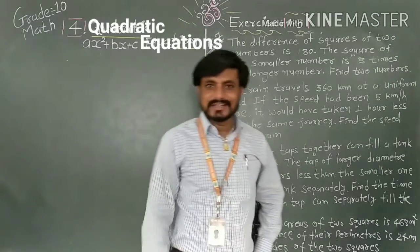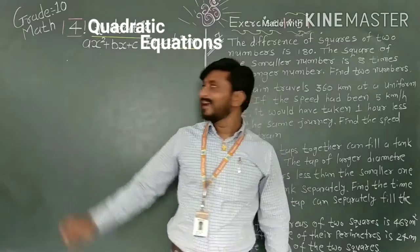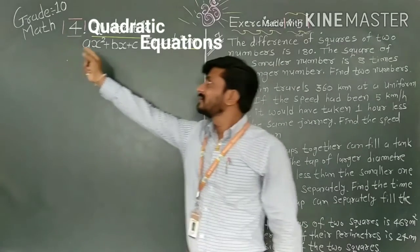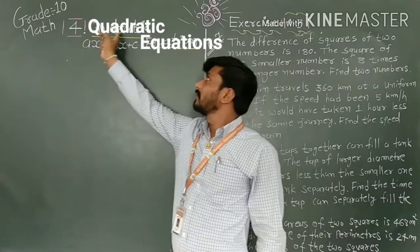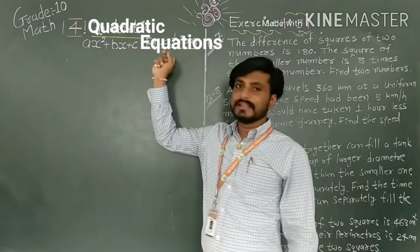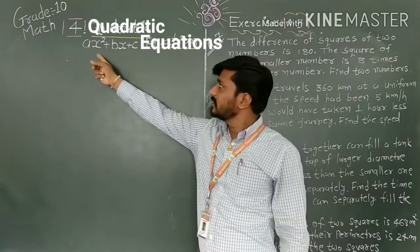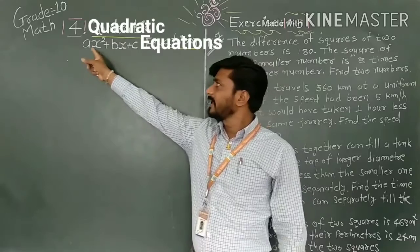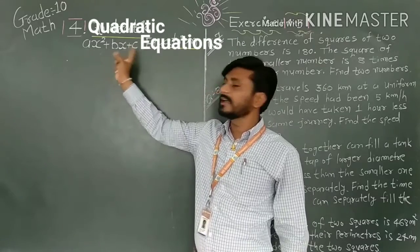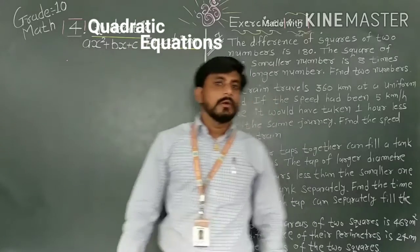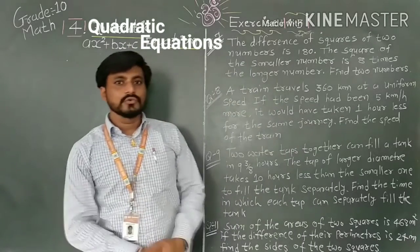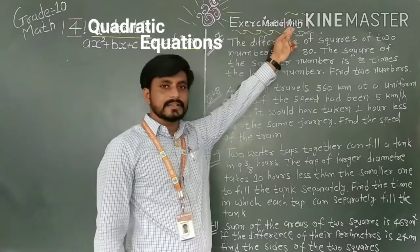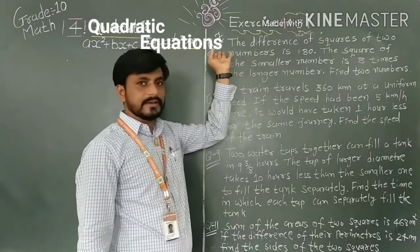Good morning students. Welcome back again in grade 10 mathematics chapter number 4, quadratic equations. This is the standard form of a quadratic equation: ax² + bx + c = 0. Today we talk about exercise 4.3, question number 7.